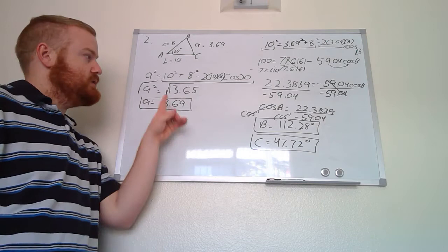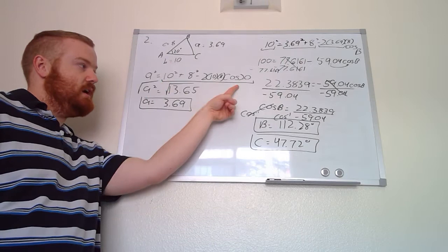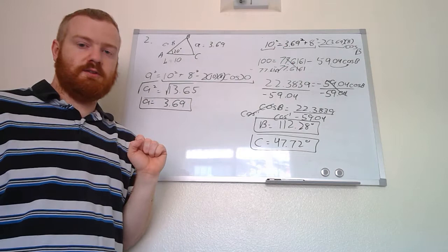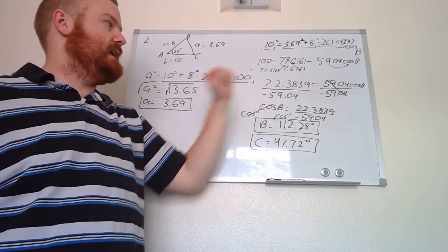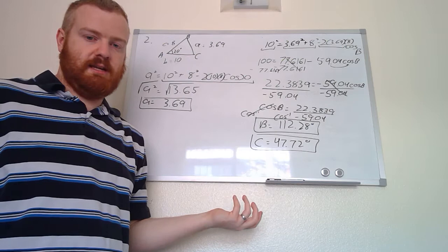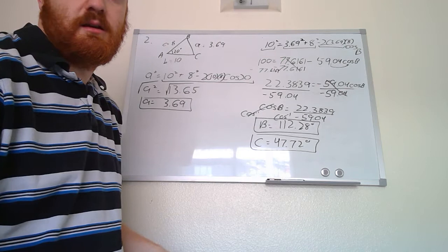When solving for a side length, you can plug everything into the calculator in one step and take the square root. When solving for an angle, it's trickier: calculate the left side squared, then the squared terms, then the coefficient in front of the cosine, combine like terms, solve for cosine of the angle, then take the inverse cosine to get the angle by itself.